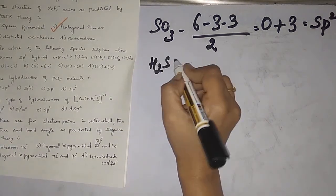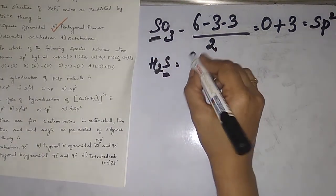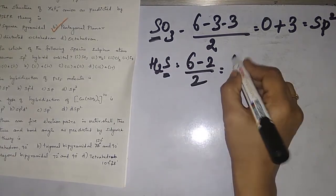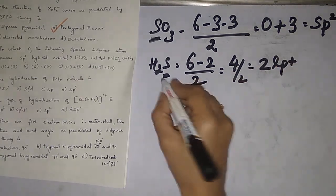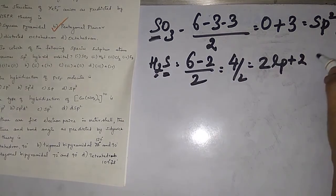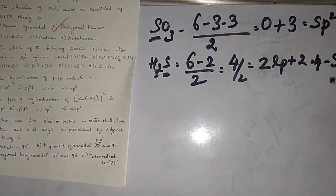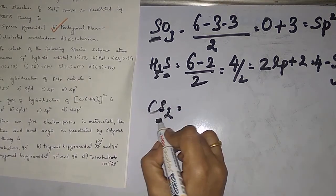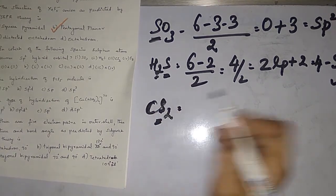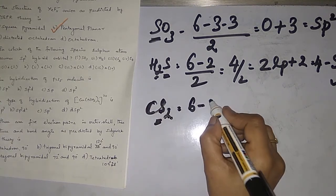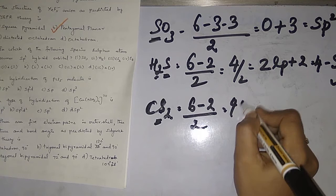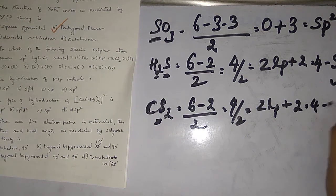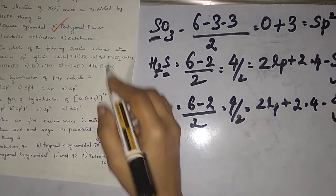For H2S: sulfur has 6 minus 2 bonded atoms divided by 2 = 2 lone pairs, plus 2 bonded atoms = 4, that is sp3. For CS2: sulfur has 6 minus 2 divided by 2 = 2 lone pairs, plus 2 bonded atoms = 4, also sp3. S8 is not possible for sp3 hybridization. So the answer is H2S and CS2 — second and third options.